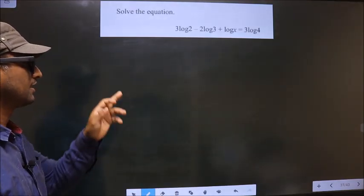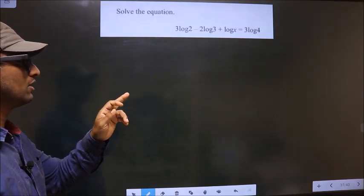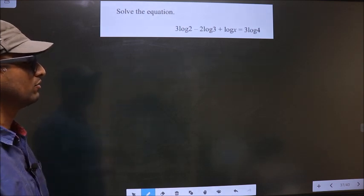Solve the equation: 3 log 2 minus 2 log 3 plus log x equals 3 log 4.